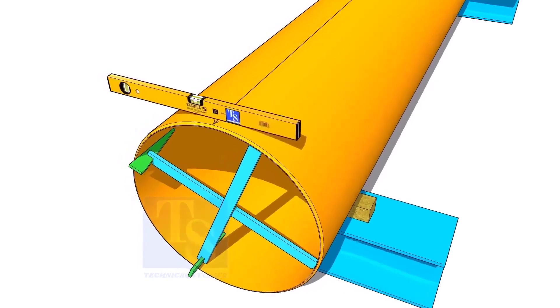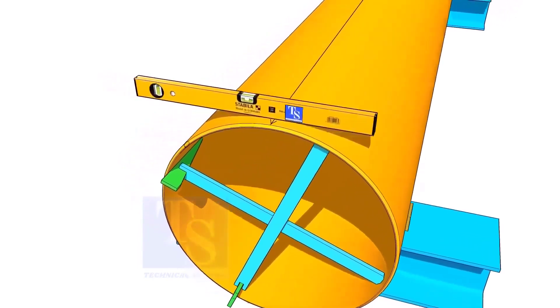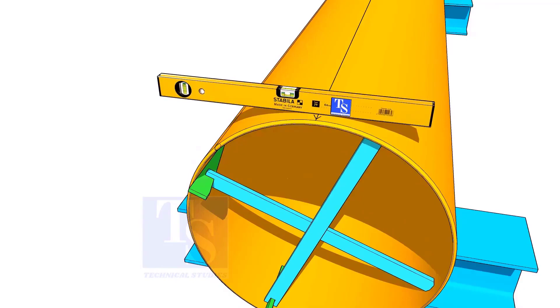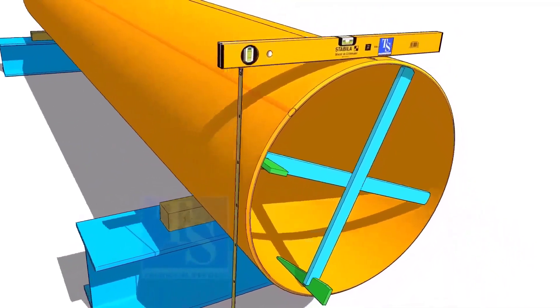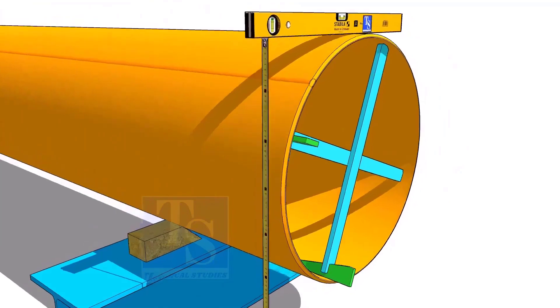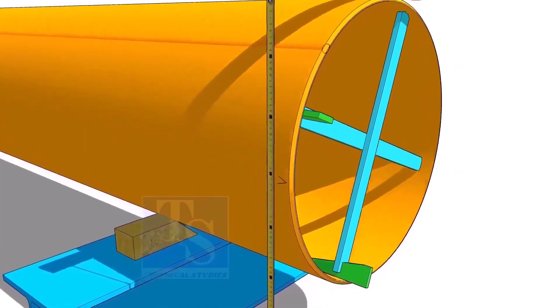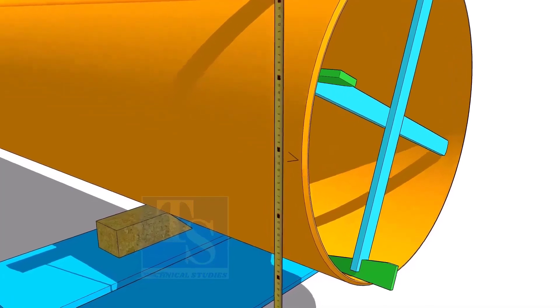Another method to mark the center line is hold the level bottle horizontal and mark half OD on the side of the pipe. The advantage of this method is you can mark two opposite center lines at the same time.